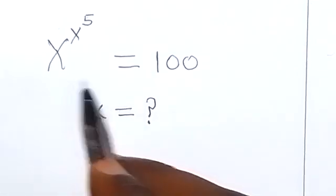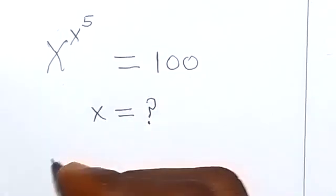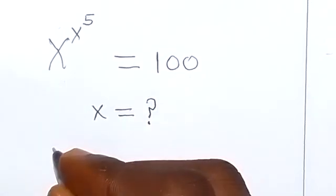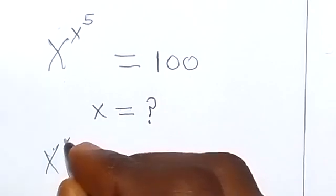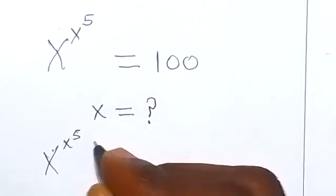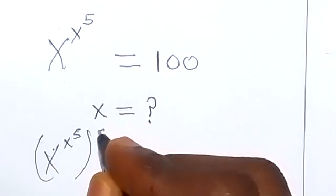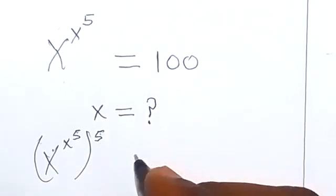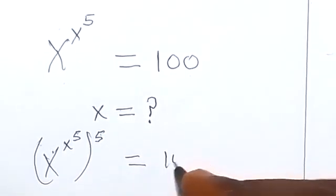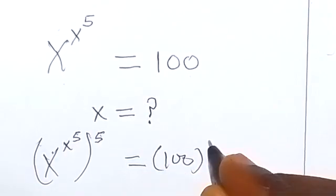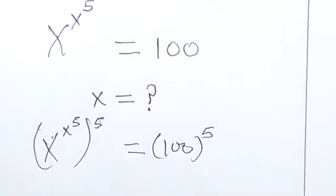So let's multiply both sides with power of 5, and this will become x raised to power x raised to power 5. Then raise everything to the power of 5 here. Then on this side as well raise 100 to the power of 5. So we have done the same thing on both sides.